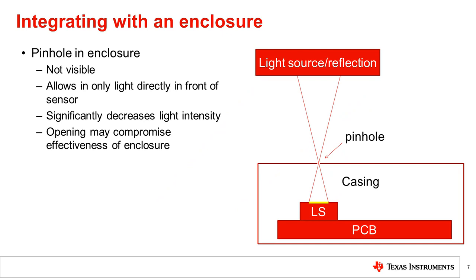From an aesthetics perspective, one would want to use the smallest possible hole, called a pinhole, in the casing to hide the light sensor while still collecting light. The lines here indicate how the light source is imaged onto the sensor area. The small hole will significantly decrease the light intensity at the sensor. Additionally, the effectiveness of the enclosure at protecting the inside from contaminants like dust and water could be compromised, even with a small hole.